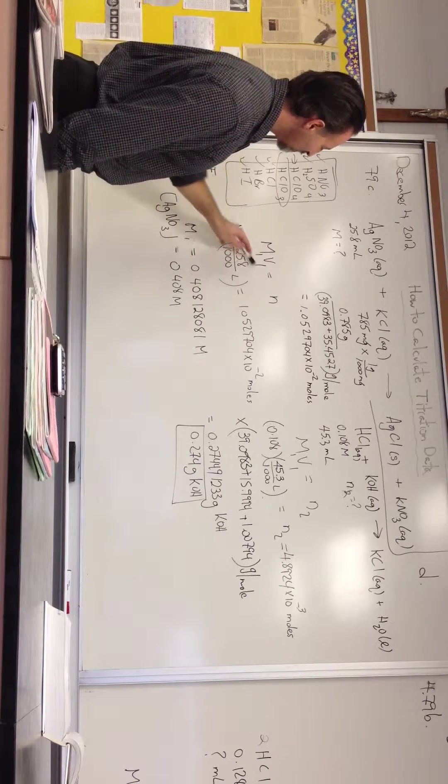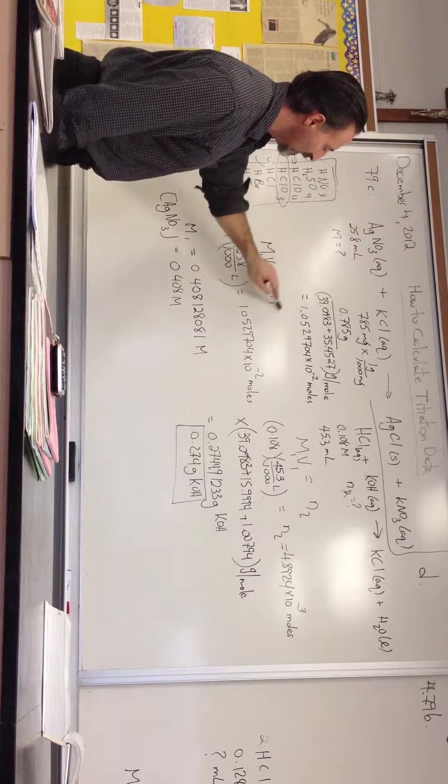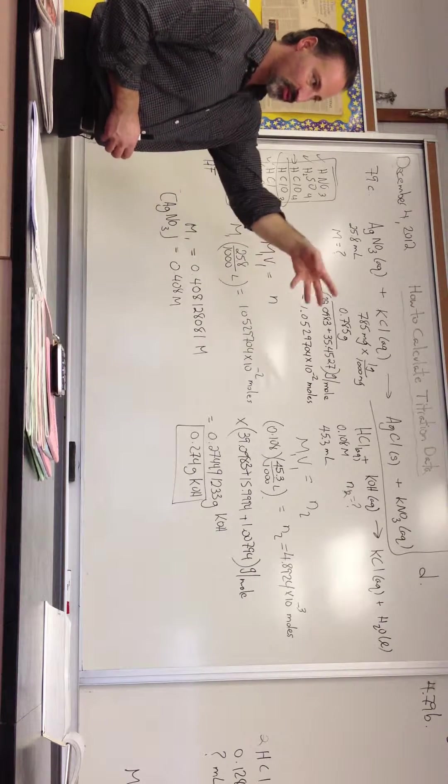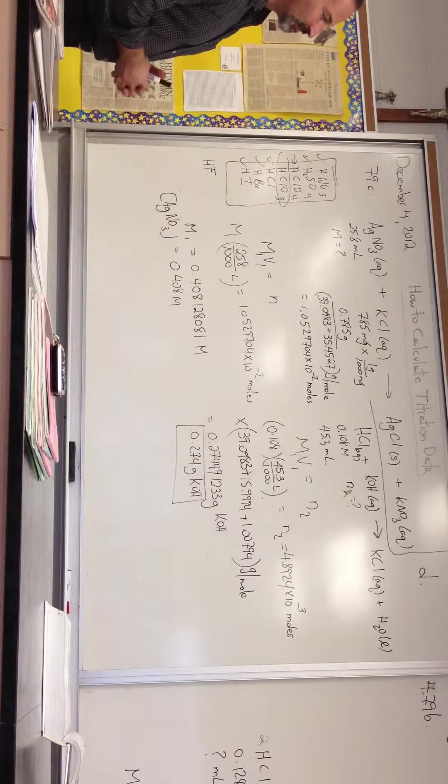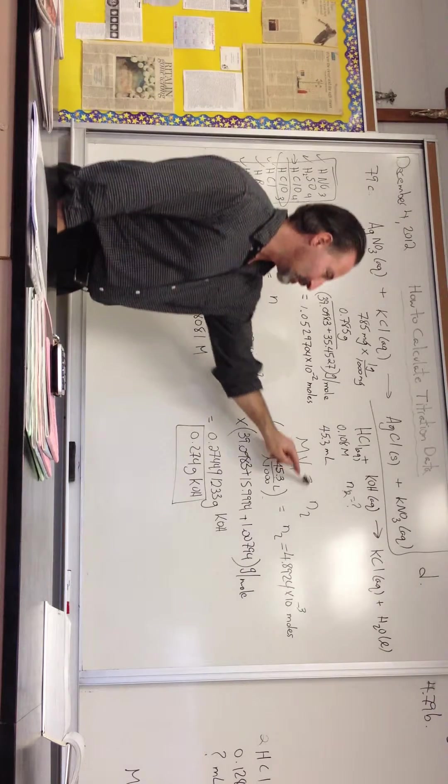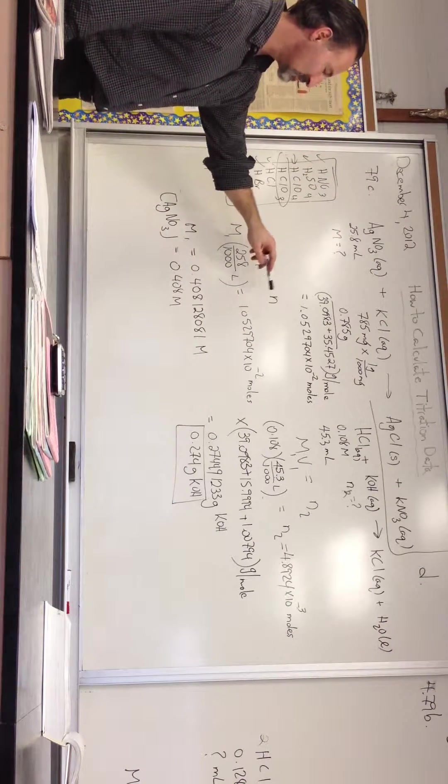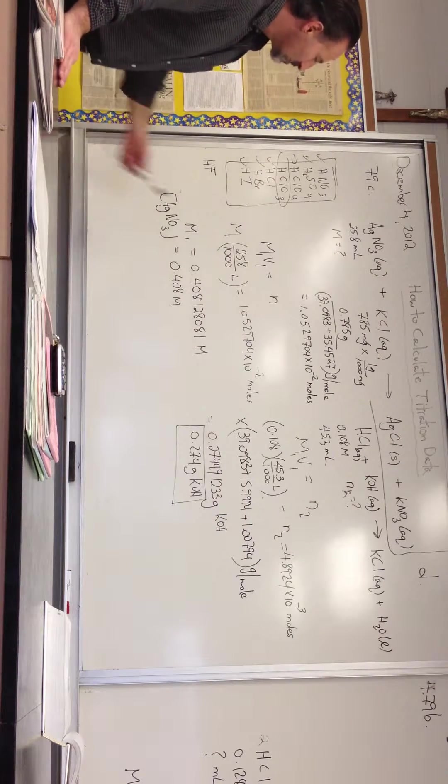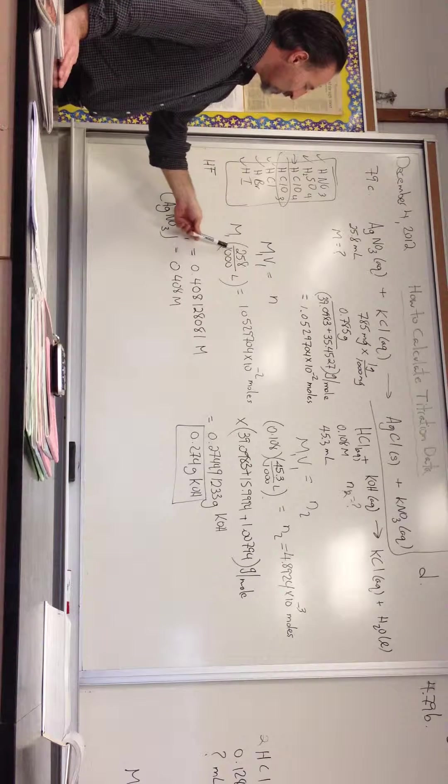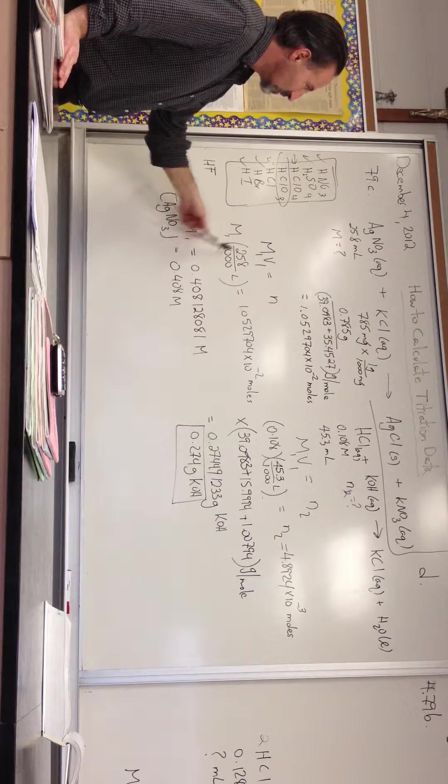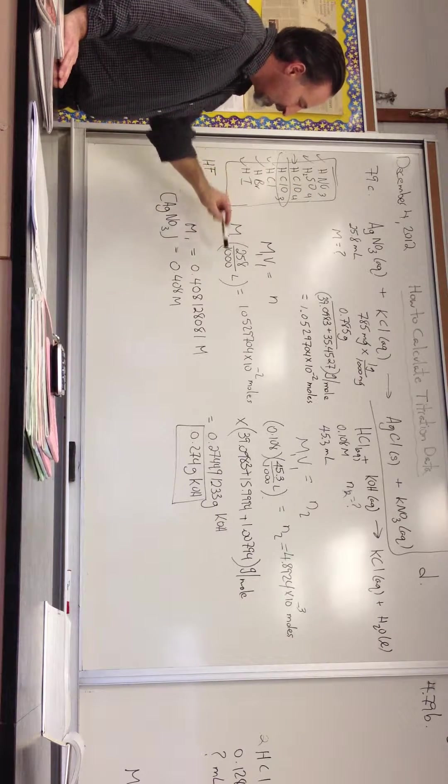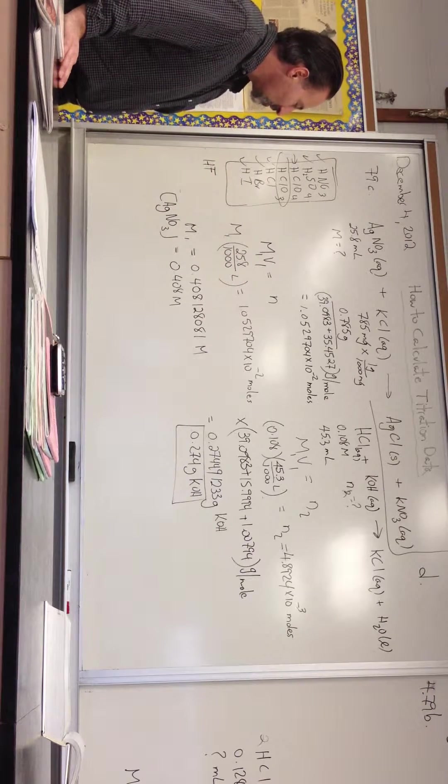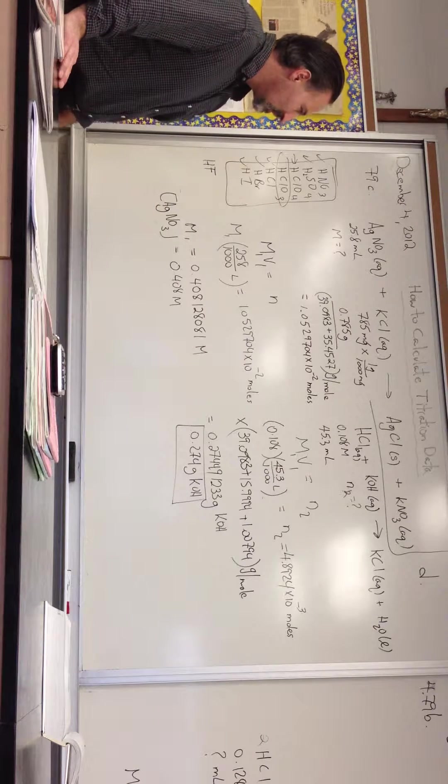We then use this equation. The M1V1 refers to the silver nitrate, and the N refers to the number of moles of KCl. Whenever you're doing one of these problems, you're going to be forced to choose one of those four permutations of this equation. The M1V1 is equal to N, and the subscripts just tell you which side of the equation you're dealing with so you don't mix up your variables. We know the volume of the solution that was used, 25.8 milliliters. The molarity we're trying to find, here's the number of moles which we calculated. We isolate M1, and we get 0.408 molar, three significant figures, 0.408 moles per liter.